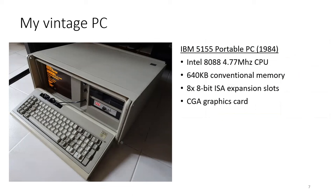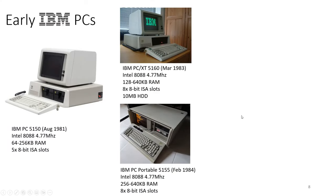Now let's look at the retro PC I have - this very old machine built in 1984. It has a very old CPU, very little RAM - one megabyte. It has an 8-bit ISA expansion slot and uses a CGA graphics card. This PC is one of the first-generation PCs from IBM. The first IBM PC is the 5150. All first-generation machines use the same Intel 8088 at 4.77MHz and 8-bit ISA slots.